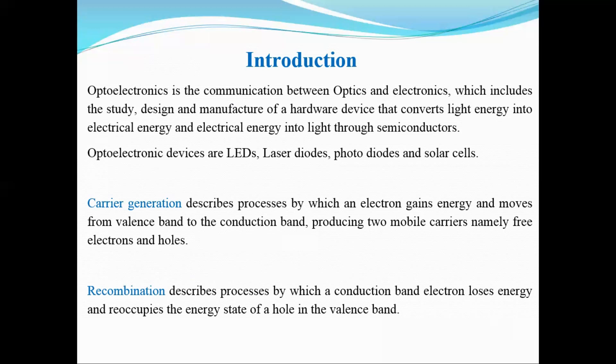What is Carrier Generation? Carrier generation is a process in which an electron-hole pair is created by absorbing some energy. The electron moves from the valence band into the conduction band, thereby creating one electron-hole pair.